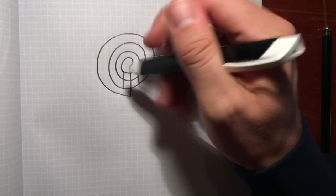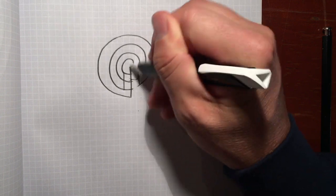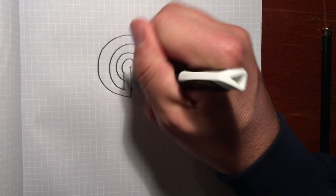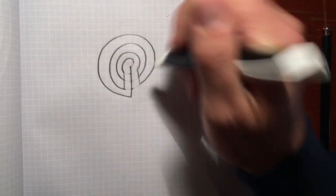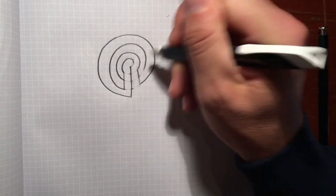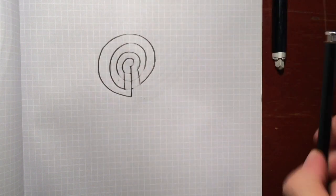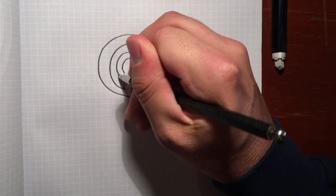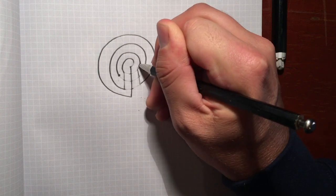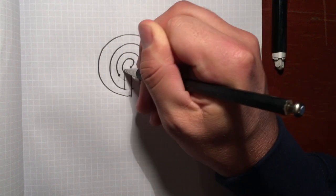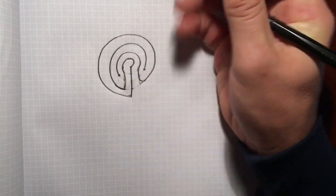And then erase the entrance to the labyrinth, the entrance to the center, and then these two line ends.